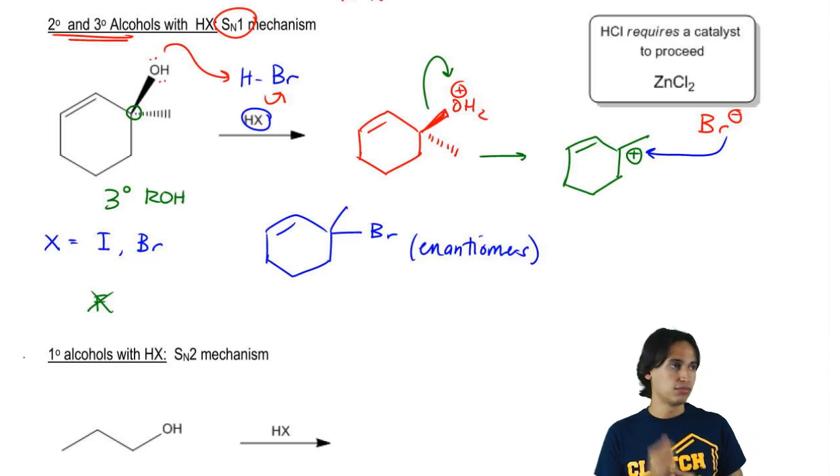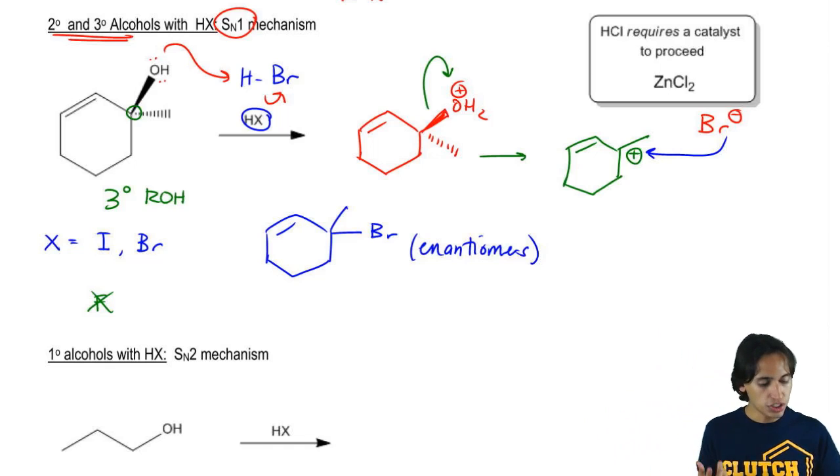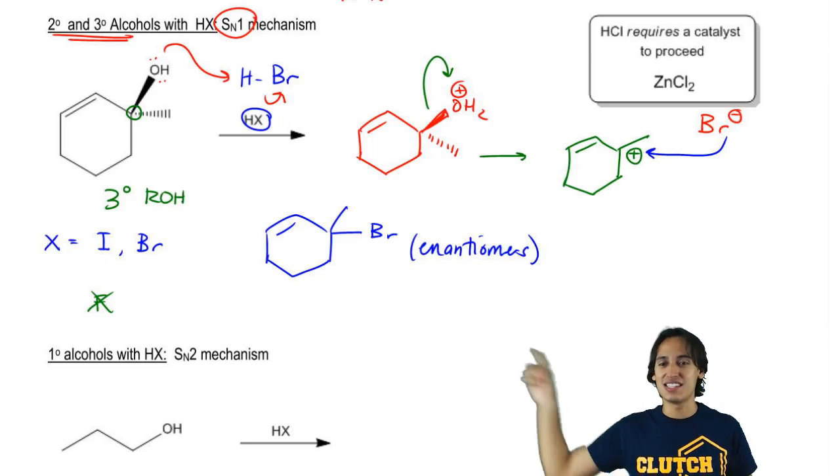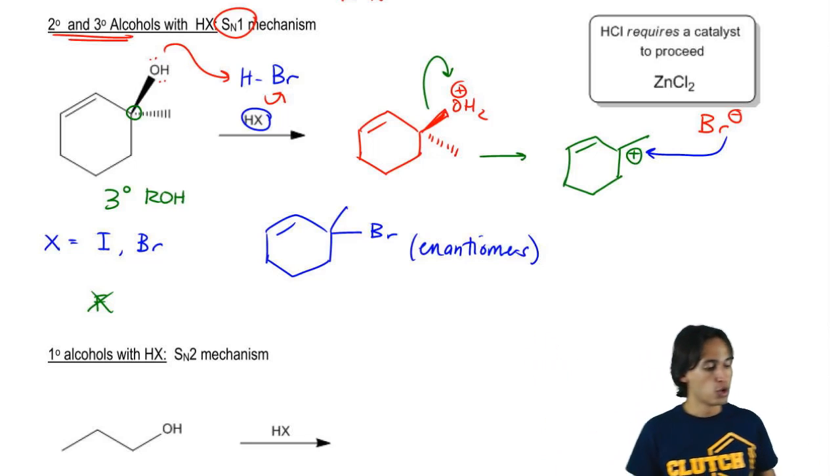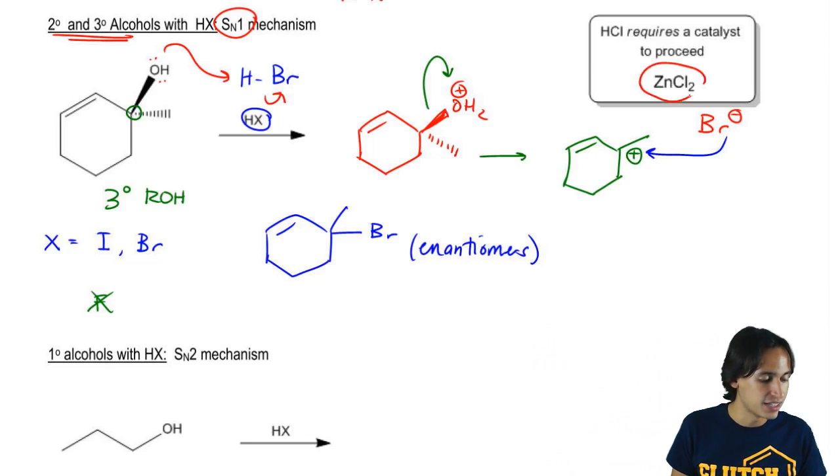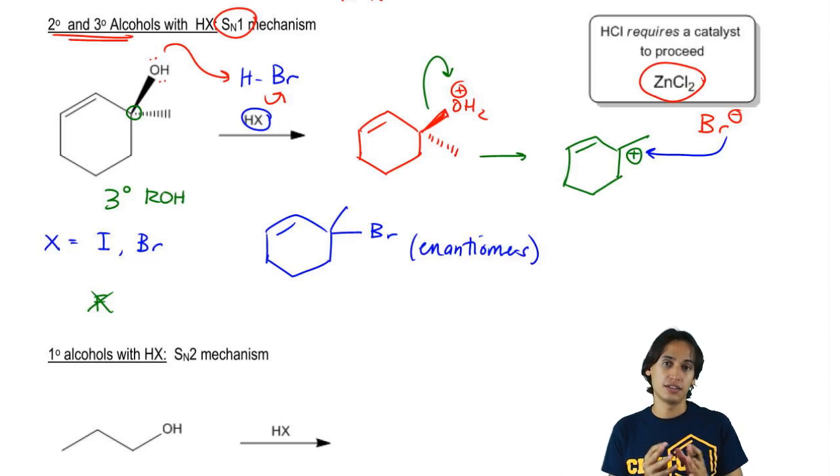But how about HCl? Well, HCl, the Cl is still a pretty strong nucleophile, but it's not strong enough to make this reaction happen in full yield, in a high yield. So what we usually do is if we really want to have a Cl instead of the Br, we're going to couple that with a Lewis acid catalyst that is zinc and two chlorines together.